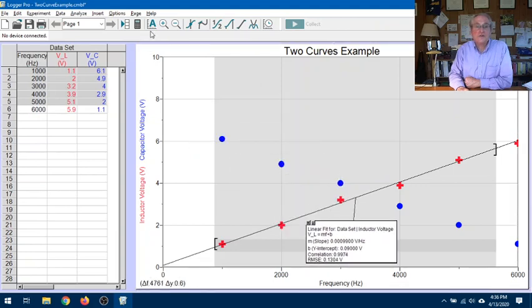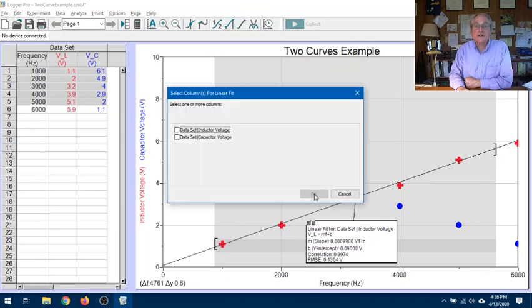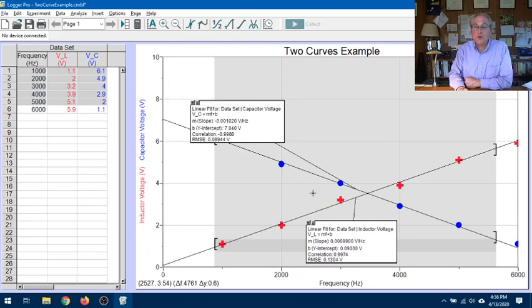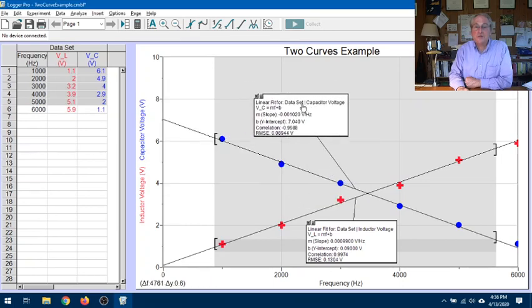And then I can also do linear fit to the second column of data. Boom. Got my, move that out of the way. And now I've got the equation for a straight line for both of these data sets. And I can use that to solve for the coordinates of the intersection and find very precisely the intersection point, the frequency of intersection. And that's the resonant frequency.